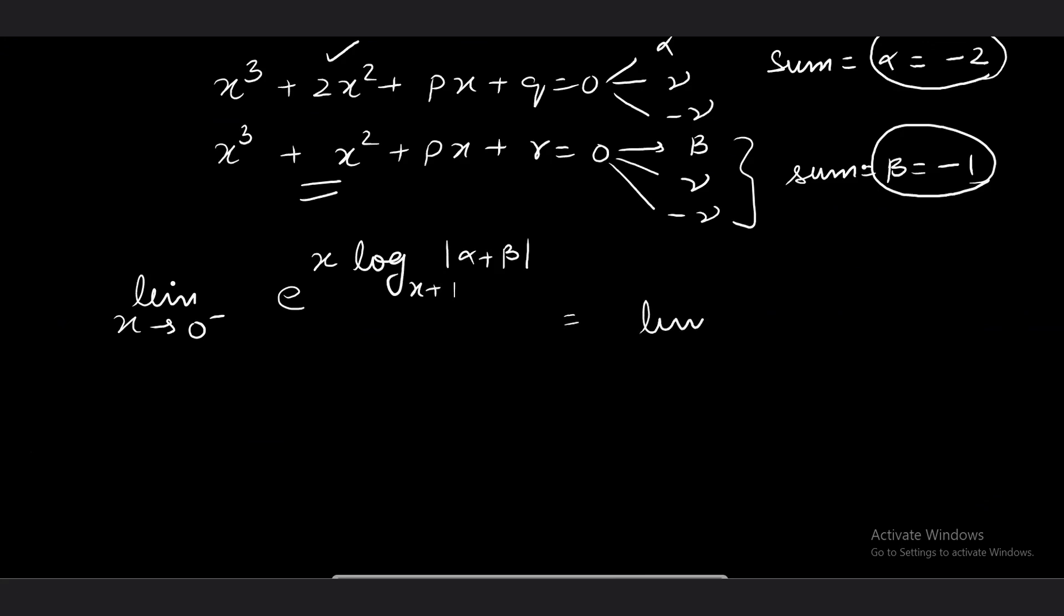It becomes limit x → 0⁻ of e^(x × ln(3) / ln(x+1)). This gives me a standard limit. If this is a standard limit, then this will be e^(ln 3), which equals 3 only. So the right-hand side limit value is 3. Now I'll do the left-hand limit.